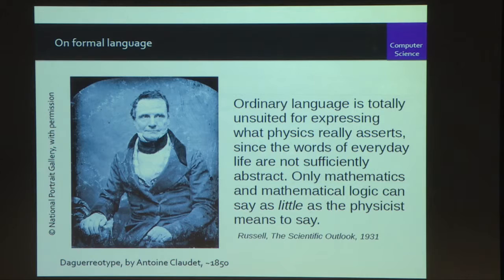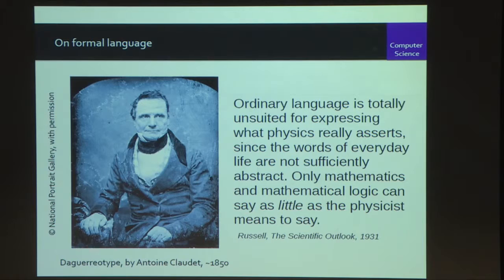Writing 80 or 90 years after this picture of Babbage was taken, Bertrand Russell said something quite interesting. It's a commonplace that ordinary language is too ambiguous to enable us to specify electronic and mathematical systems. But Russell makes the very excellent point that only mathematics and mathematical logic can say as little as the physicist needs to say. This idea that what we're going to do is strip meaning out of symbols so as to deliver precision and insight is absolutely at the heart of what we do in mathematics and in computing and in all other forms of engineering.